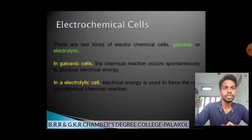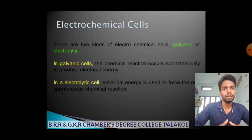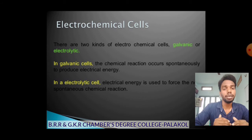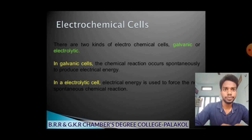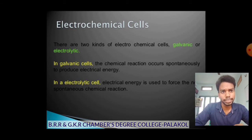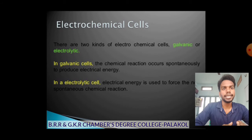Regarding electrochemical cells, there are mainly two types. A galvanic cell is one where a chemical reaction occurs spontaneously to produce electrical energy — chemical energy is converted into electrical energy. An electrolytic cell is one where electrical energy is used to drive a non-spontaneous chemical reaction — electrical energy is converted into chemical energy.